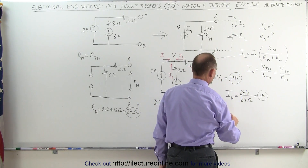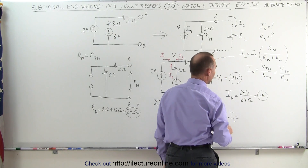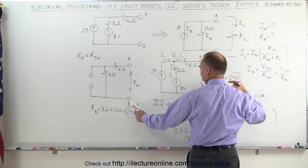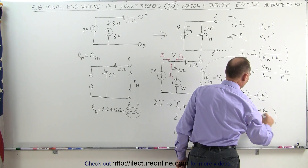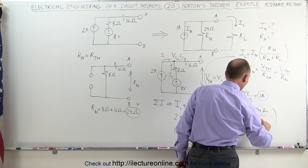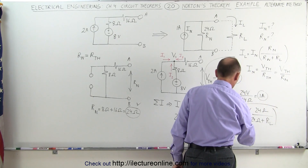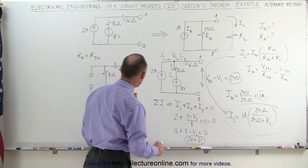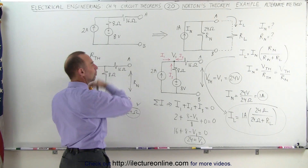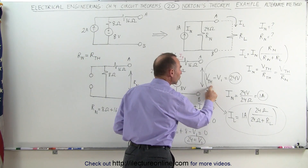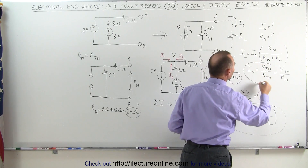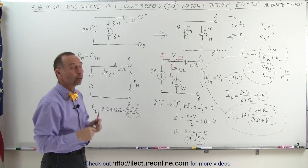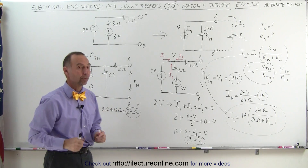The load resistor current, I sub L, equals the Norton current of 1 amp, multiplied by R sub n of 24 ohms, divided by R sub n of 24 ohms plus the load resistor — whatever the load resistor is. So that's how we find the current through the load resistor using this method: first find the Norton resistance just like in the previous video, then find the Thevenin voltage, and then I Norton equals Thevenin voltage divided by the Thevenin resistance. That's our second method of finding the equivalent Norton circuit.